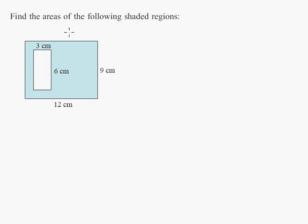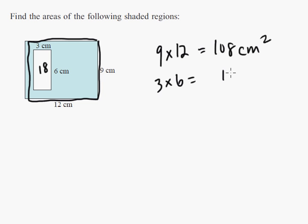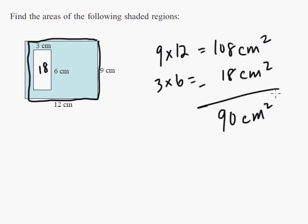Let's look at one right here. Find the areas of the shaded regions. The shaded region is the blue area. If you looked at the whole big rectangle — that's 9 times 12 centimeters, which is 108 centimeters squared. If we want the shaded area, we just subtract the white region out. That's 3 times 6, which is 18 centimeters squared. So 108 minus 18 would be 90 centimeters squared — that's your answer. You just have to come up with a strategy.